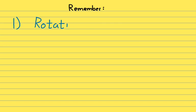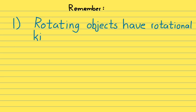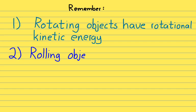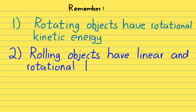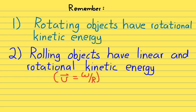Some quick reminders: rotating objects have rotational kinetic energy — that's the k equals one-half I omega squared equation. Rolling objects have both linear and rotational kinetic energy. And if you can remember that v equals omega times r, that'll make your problem-solving life much easier. That's the end of this physics video — until next time.